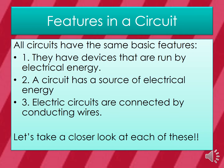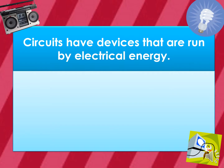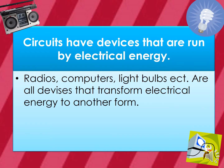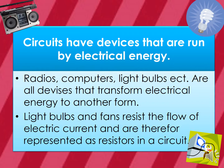Circuits have devices that are run by electrical energy — radios, computers, light bulbs, etc. — all devices that transform electrical energy to some other form, whether it's light or heat. Light bulbs and fans resist the flow of electric current and are therefore represented as resistors in a circuit. You need a resistor in a circuit because without one, what happens is called a short circuit — if there's nothing to resist or slow the flow down, it can short circuit or catch on fire, and that's the cause of many house fires.